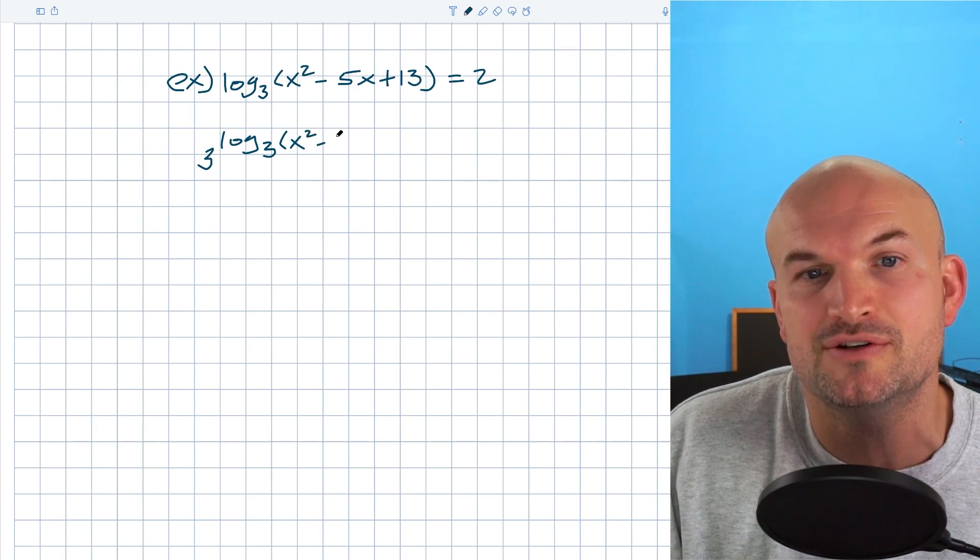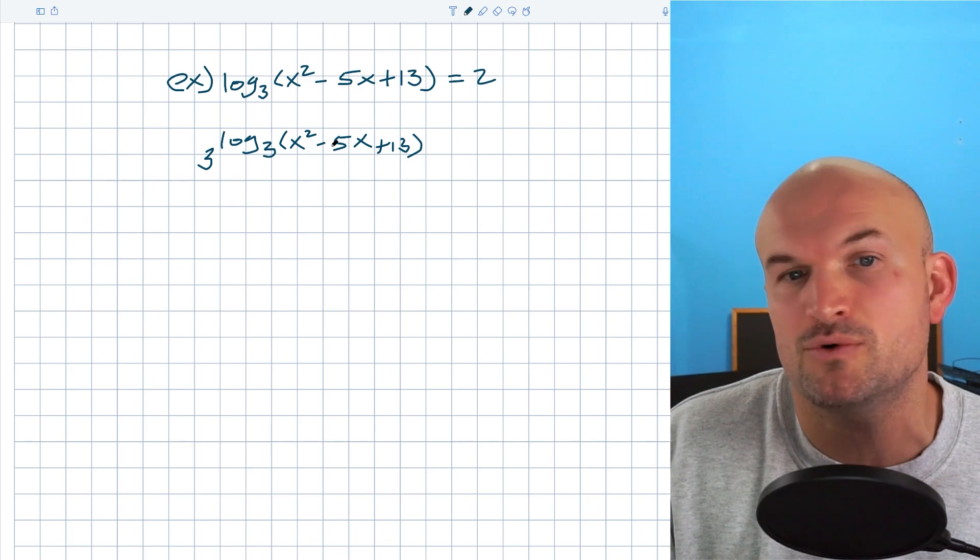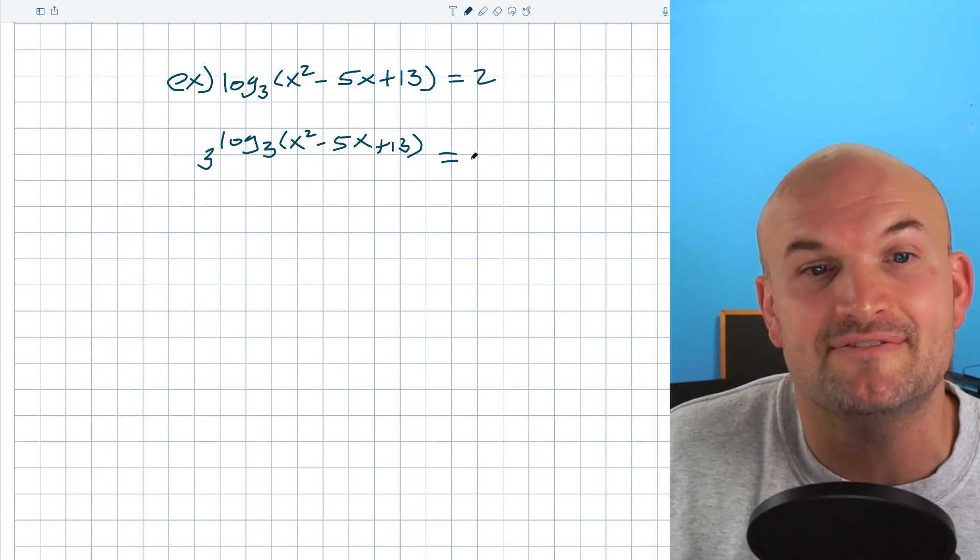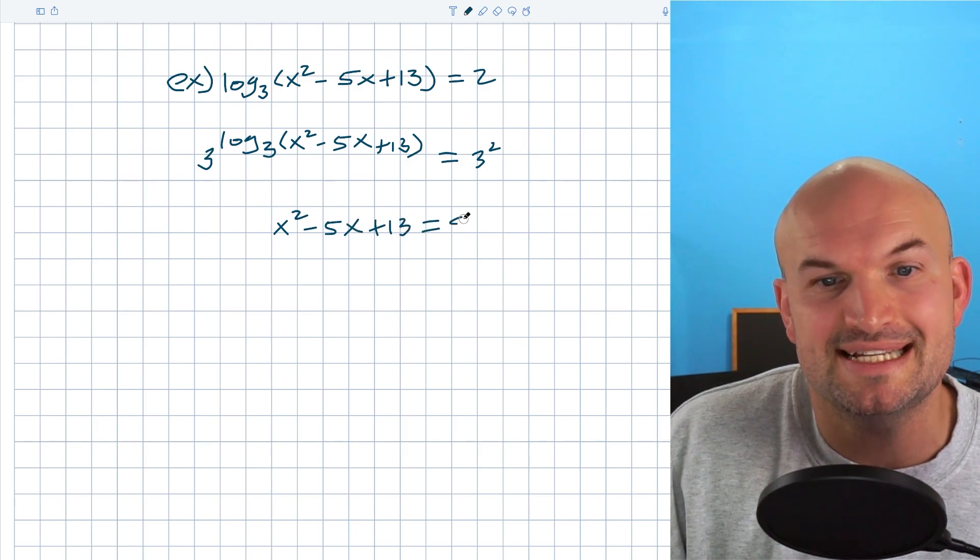And again, because now I can use that rule of logarithm, this is now going to undo each other. And I'm just going to be left with x squared minus 5x plus 13 on the left-hand side. So therefore I'm left with x squared minus 5x plus 13 and is now equal to 9.